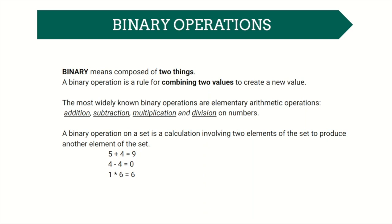Five plus four gives nine, four minus four gives zero, one times six equals six. These are all examples of a binary operation as they involve two operands and an operation and produce a result.